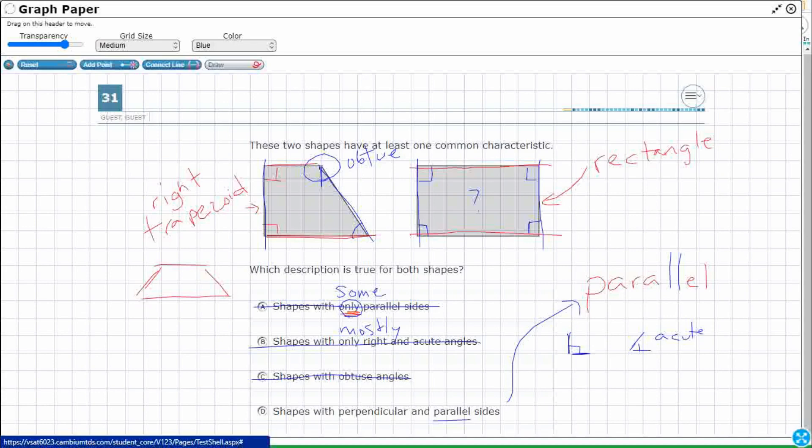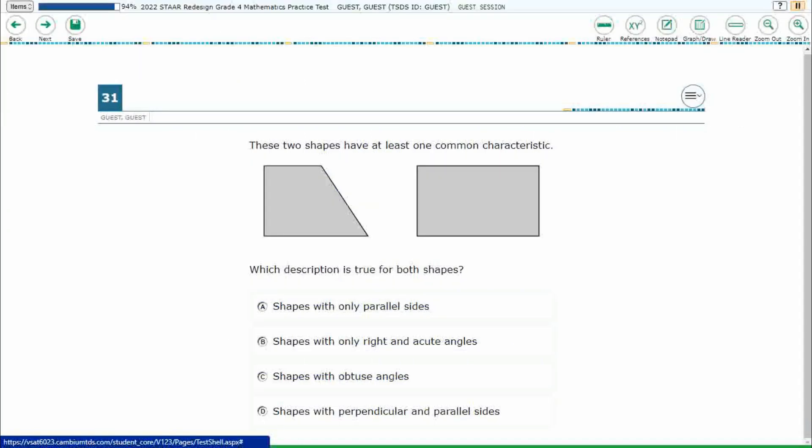Perpendicular are right angles. These are perpendicular. The angle is right, but the lines are perpendicular. So perpendicular has right angles. And do both shapes have perpendicular? Yep. Right angles. Do both shapes have parallel lines? Yes. Two sets for the rectangle, one set for the trapezoid. So there we go. My answer is D.